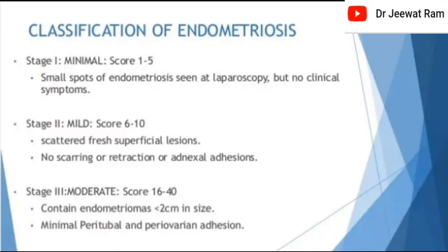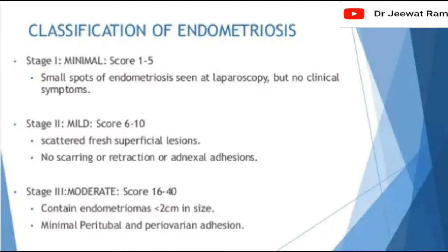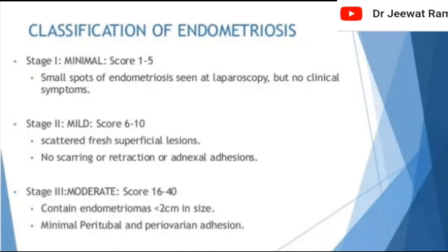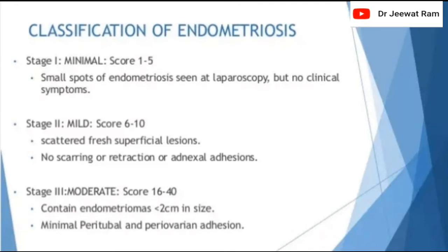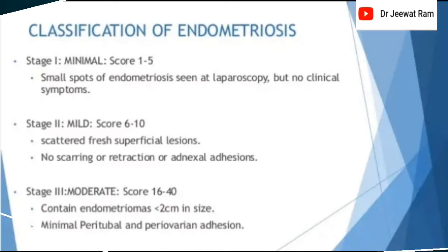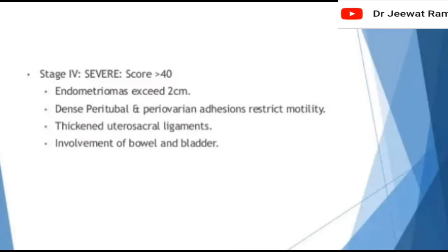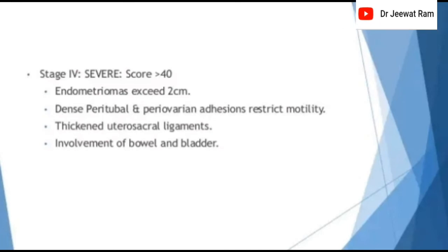Classification of endometriosis: Stage 1 (Minimal, score 1–5) — sparse endometriosis seen at laparoscopy with no clinical symptoms. Stage 2 (Mild, score 6–10) — scattered fresh superficial glands, no scarring or retraction or adnexal adhesions. Stage 3 (Moderate, score 16–40) — contained endometriosis less than 2 cm, minimal peritubal and periovarian adhesions. Stage 4 (Severe, score >40) — endometriosis exceeding 2 cm, dense peritubal and periovarian adhesions restricting mobility, thickened utero-sacral ligaments, and involvement of bowel and bladder.